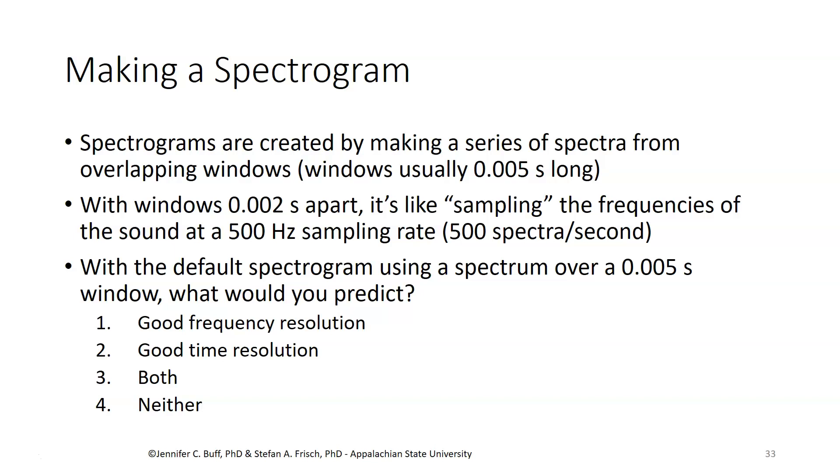These windows are typically 0.005 seconds, or 5 milliseconds long, so that's fairly short. And then, from one window to the next, we shift our time window by 0.002 seconds, 2 milliseconds. So, we're doing something like sampling the frequencies of the sound about 500 times per second to get a picture of what the frequencies are and their changes over time.